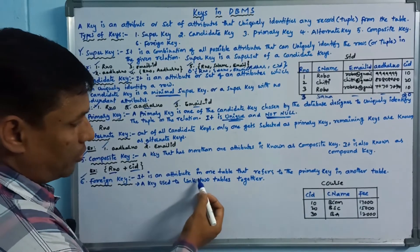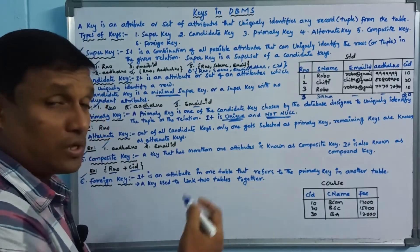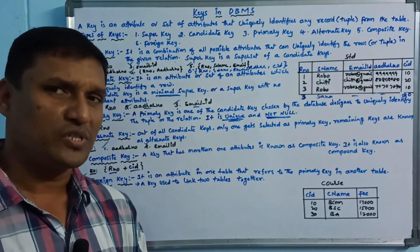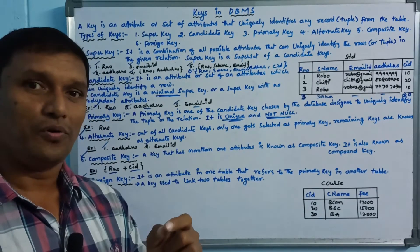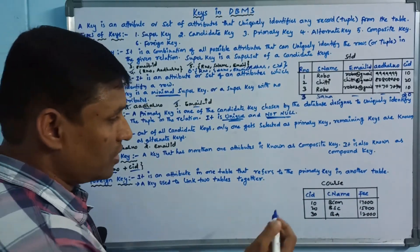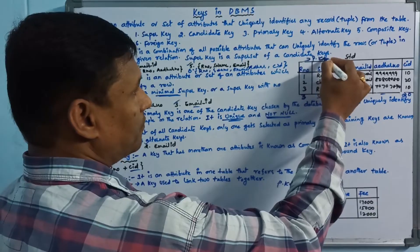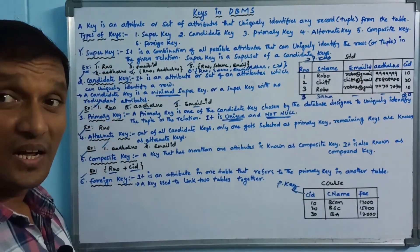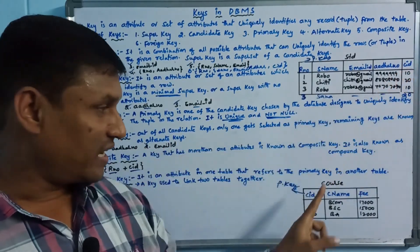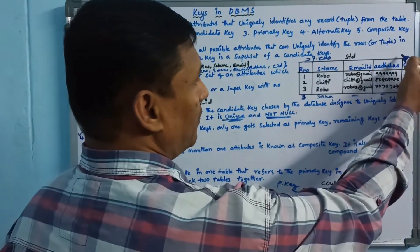Foreign key — last one. It is an attribute in one table that refers to the primary key in another table. A foreign key is used to link two tables together and establish a relationship between them. For example, here is a course table with course ID as the primary key. There is also a student table with rule number as its primary key. The course ID appearing in the student table refers back to the course table's primary key — that is the foreign key.